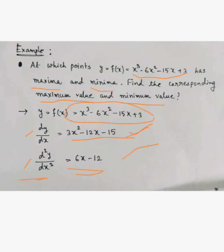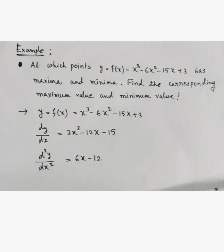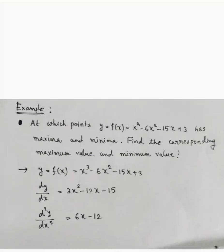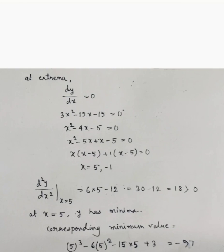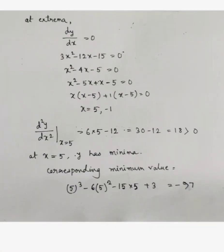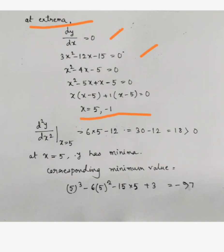After finding the first and second order derivatives, the key condition is that at extrema dy/dx = 0 — that means at both maxima and minima. Setting 3x² − 12x − 15 = 0 gives a quadratic equation. Solving this quadratic equation, we find two values of x: x = 5 and x = −1.